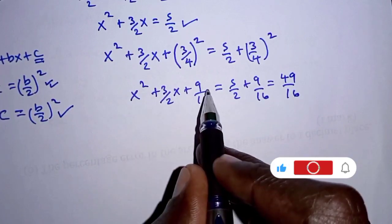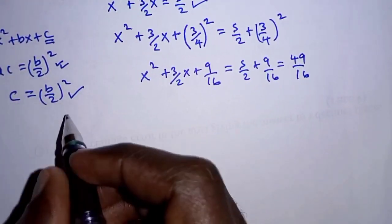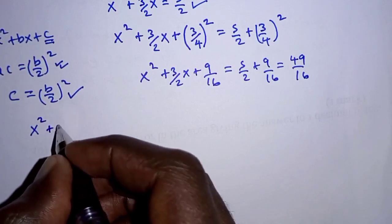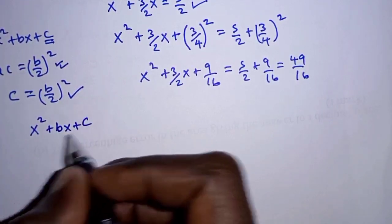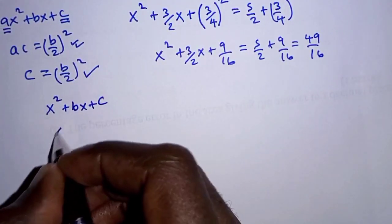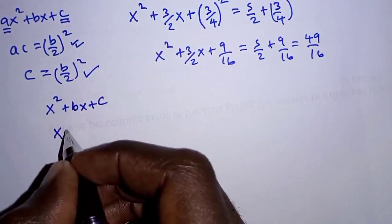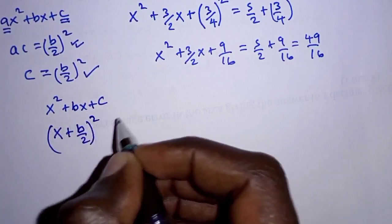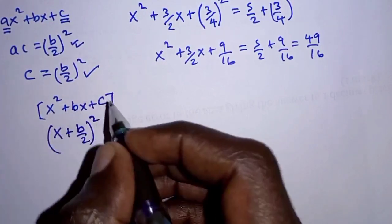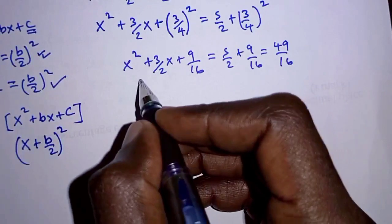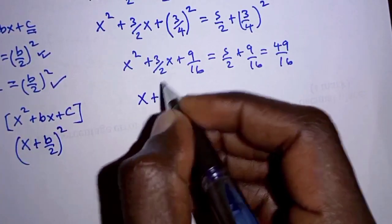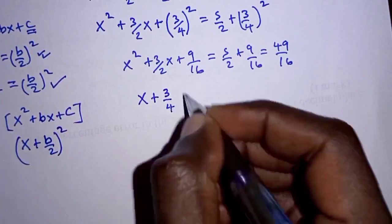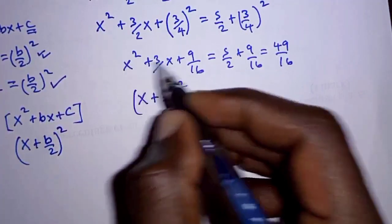Since the expression is a perfect square, we can factorize it directly. For x squared plus bx plus c as a perfect square, we write it as x plus b over 2, all squared. Applying that here, the left hand side becomes x plus 3 over 4, all squared, since b is 3 over 2 and a half of 3 over 2 is 3 over 4. Squaring this gives back the original expression.